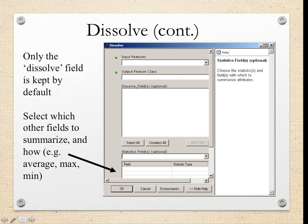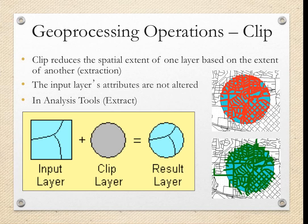The first geoprocessing tool I'll talk about is Dissolve. This tool combines feature classes in a single layer based on a similar attribute value. For example, if you had one layer for streets and Main Street had small segments on different blocks displayed as separate entries in the attribute table, you would use the Dissolve tool to combine all those into one street to represent how it actually is in real life. This function becomes really important when you are creating new spatial data.